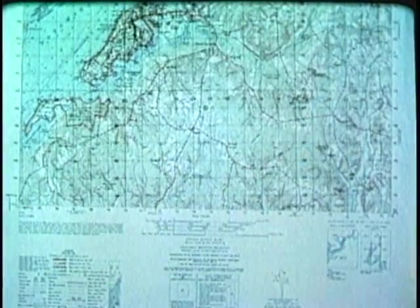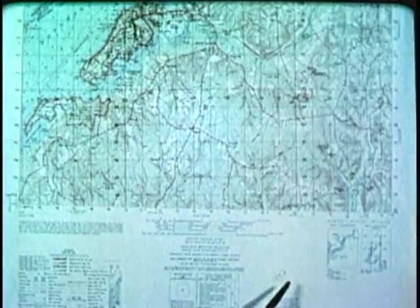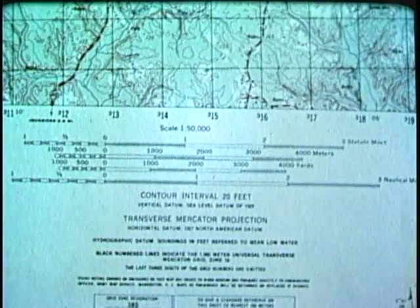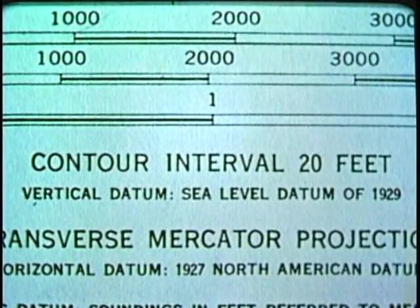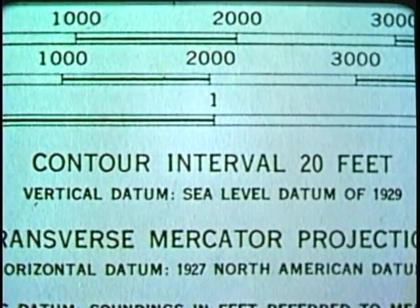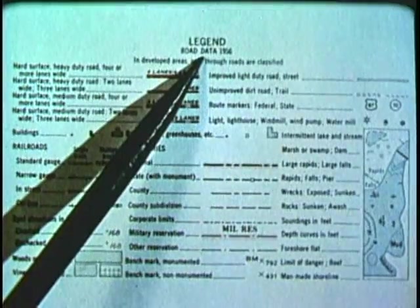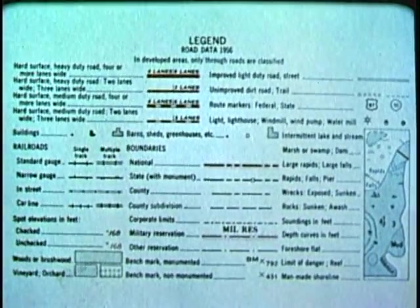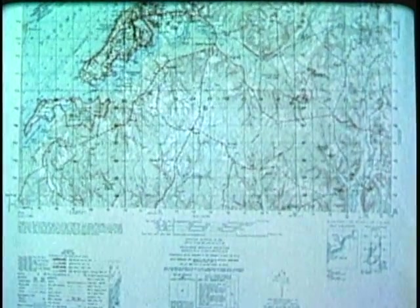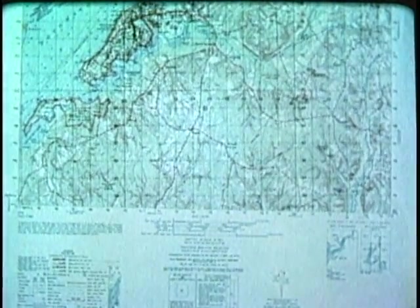First, let us note what might be called the operating instructions. These are placed around the map edges and termed marginal information. This contains such essential information as the scale to which the map is drawn, graphic or bar scales used in translating map distances into actual ground distances, and the contour interval or vertical distance represented by contour lines on the map. The lower left-hand corner contains the legend, which illustrates and identifies the symbols used on the map. For speed and efficiency in map reading, the first requirement is to learn and memorize the more common symbols.